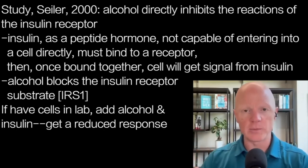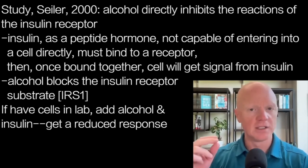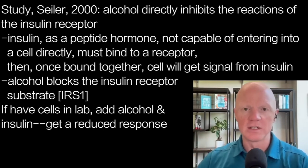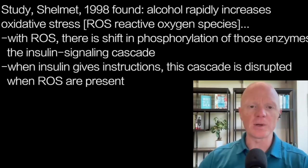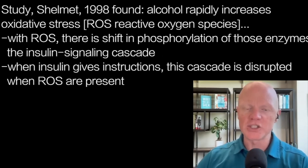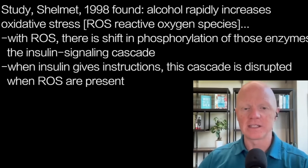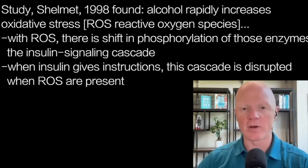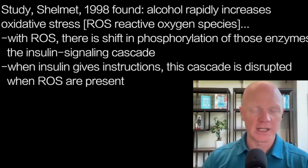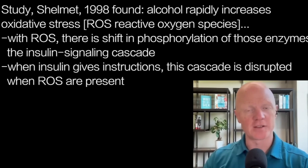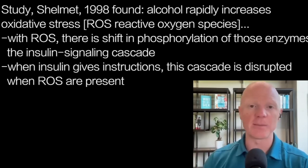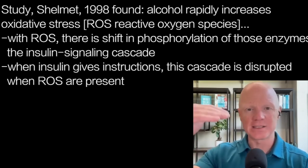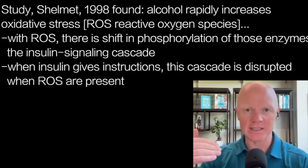So ethanol — if you incubate cells with ethanol and then add insulin to the culture — you immediately detect a reduced responsiveness. Also, a paper by Shelmett et al. in 1988 finds that ethanol rapidly increases oxidative stress products, these reactive oxygen species. With more oxidative stress comes a shift in the phosphorylation state and activation of some of those same enzymes in the insulin signaling cascade.